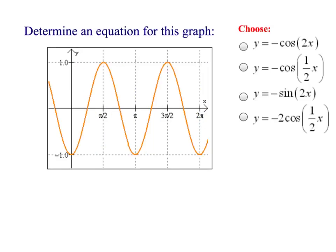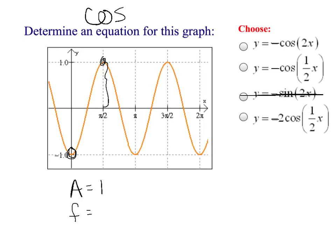The fourth and final graphing problem: the curve doesn't start at the origin, so it's instantly a cosine graph — eliminate choice C. It's also upside down; we started with a min instead of a max, so I need a negative coefficient. Choices A, B, and D all have negative coefficients, so I can't eliminate based on that alone. Amplitude appears to be 1. Frequency: the first cycle completes at pi and the second at 2 pi, so frequency is 2. Choice A wins — negative 1 coefficient with frequency 2.